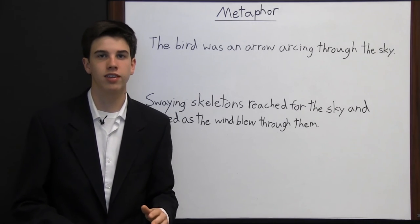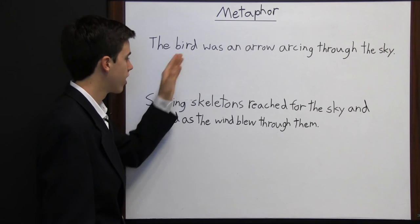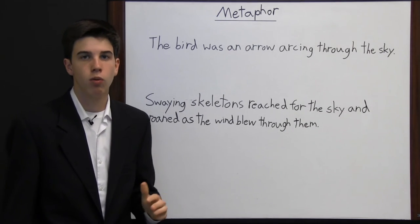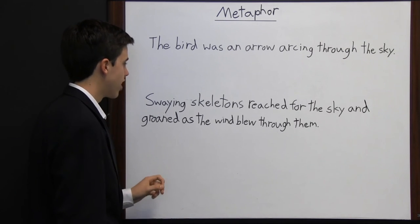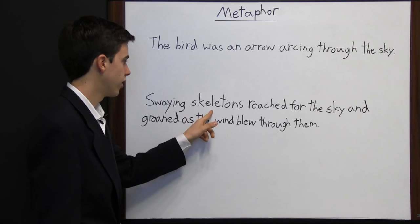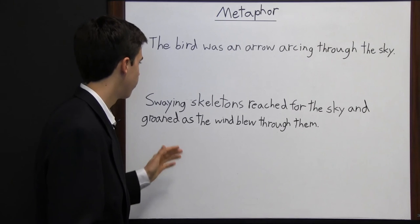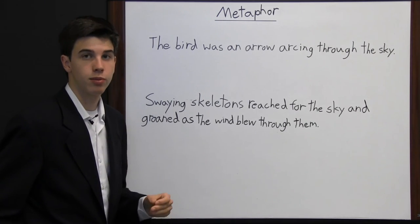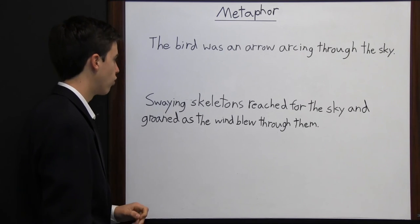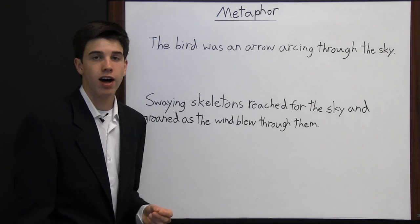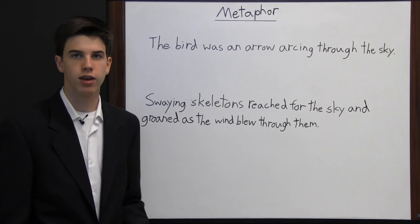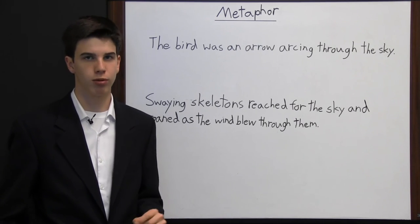Sometimes authors use metaphors but don't directly tell you what they're talking about. Look at this sentence: "Swaying skeletons reached for the sky and groaned as the wind blew through them." Here we don't know exactly what the author is talking about, but we can infer that the author is talking about trees — trees would sway back and forth, and maybe it's winter and the trees don't have any leaves, so it's just like the skeleton of a tree. This is another example of a metaphor where the author is comparing the trees to skeletons, which allows the reader to look at the trees in a different perspective.